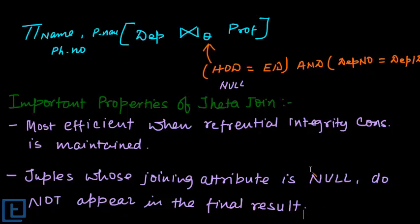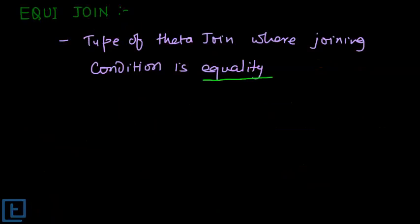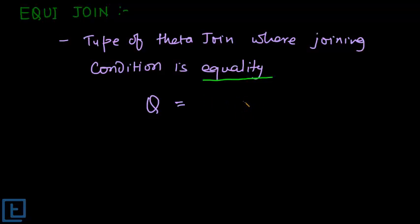Tuples whose joining attribute is null do not appear in the final result. This is all about theta join. Now let's understand equi join. Equi join is basically a theta join where theta is the equality condition — that is, attribute1 of one relation equals attribute1 of another relation. There is nothing much more to it; it is just a specific case of theta join.